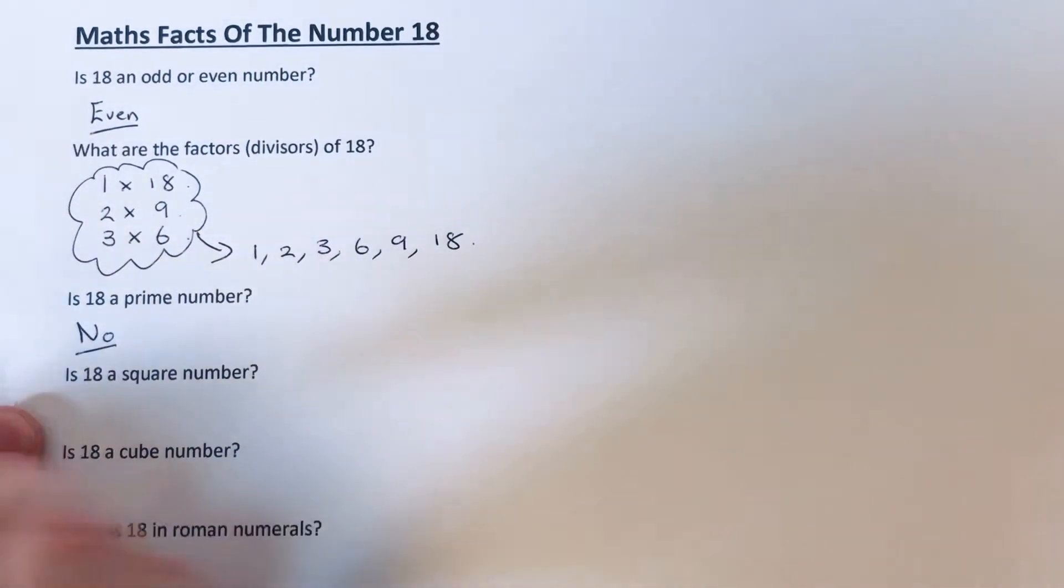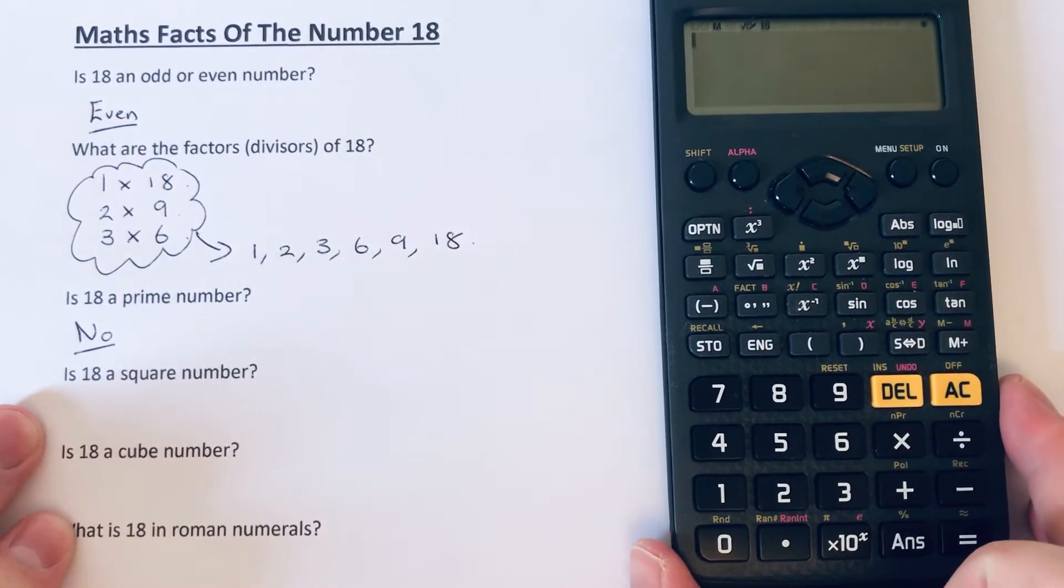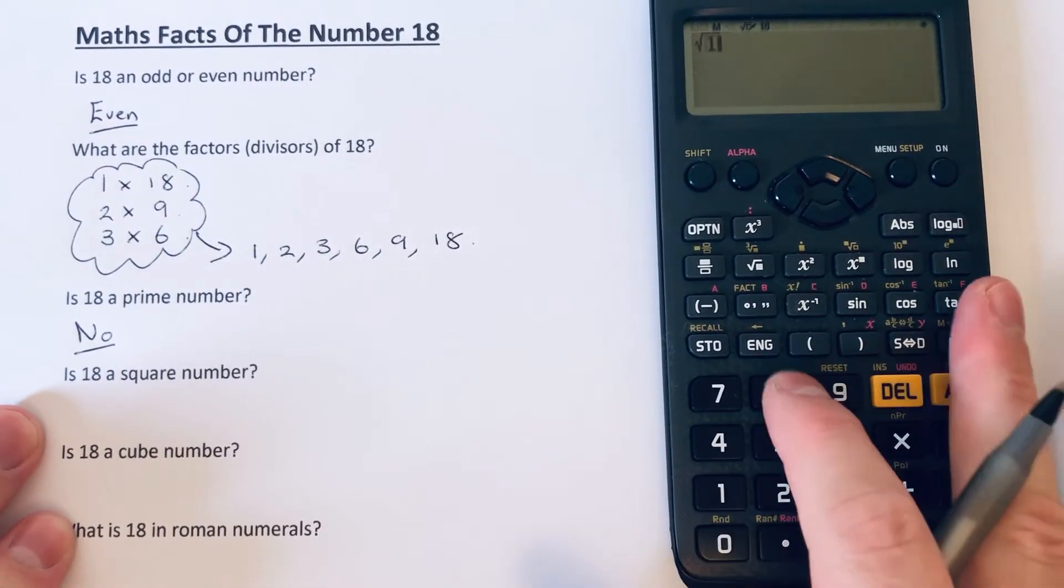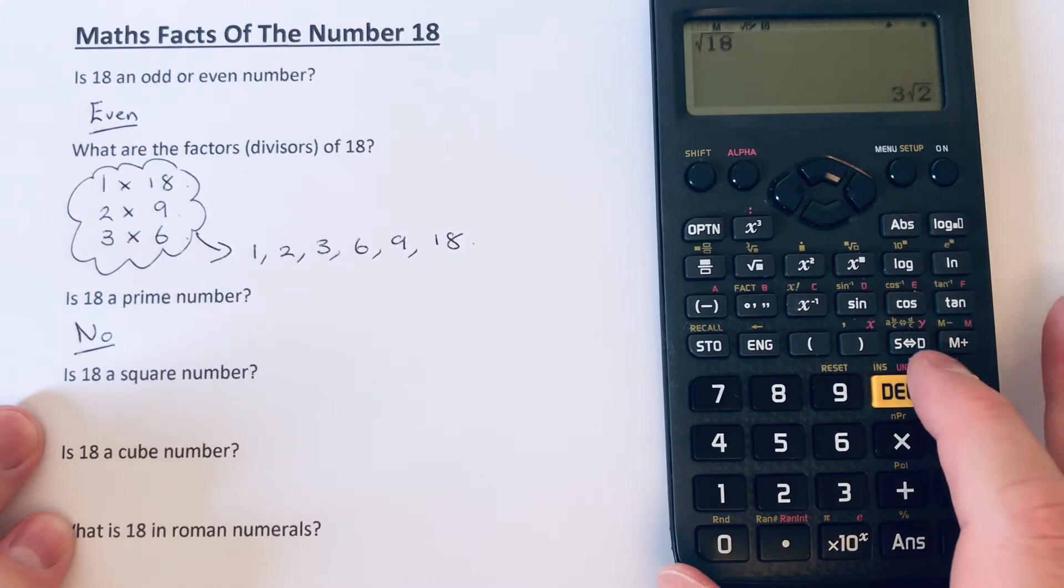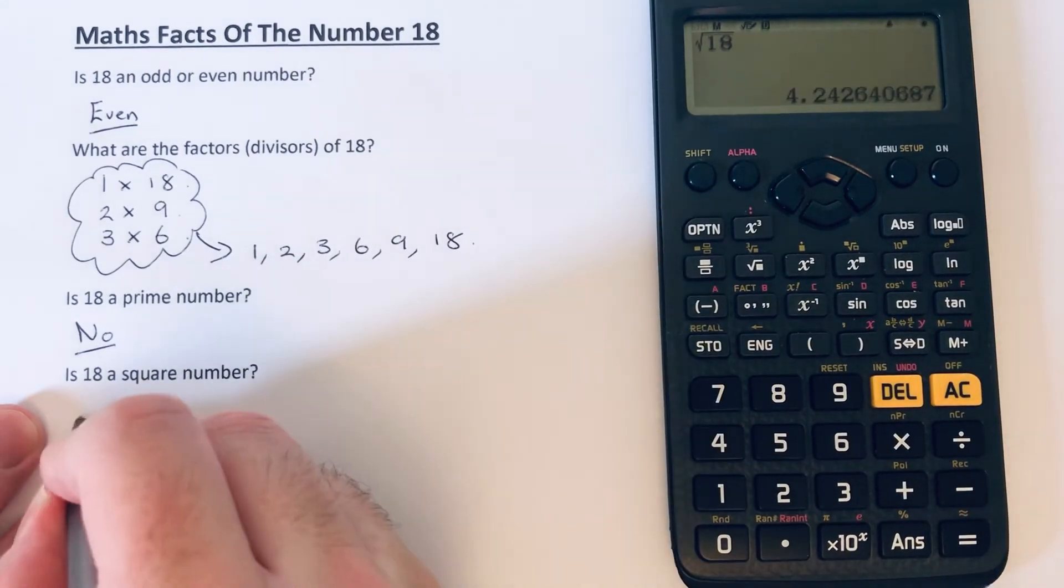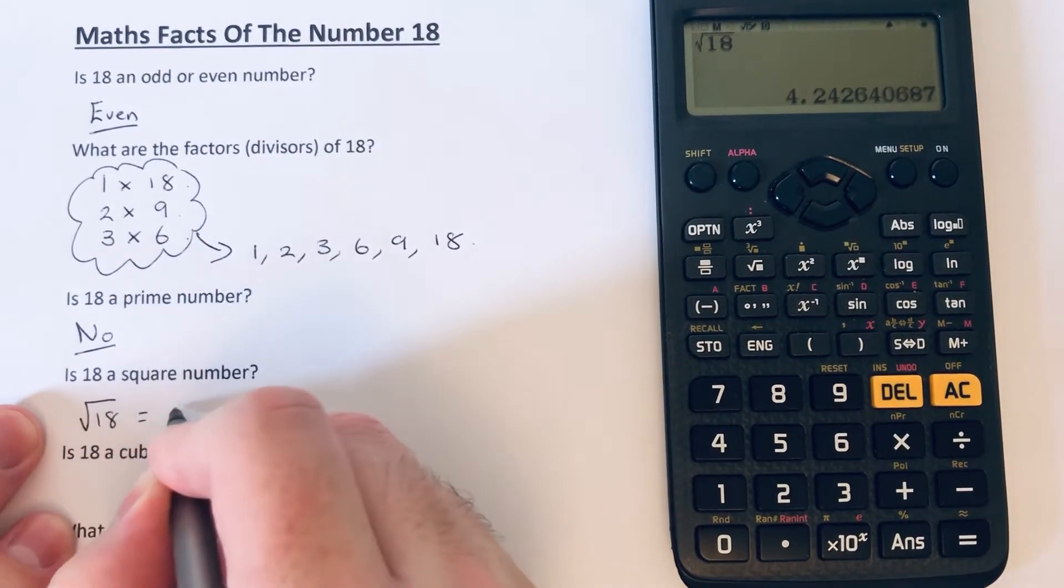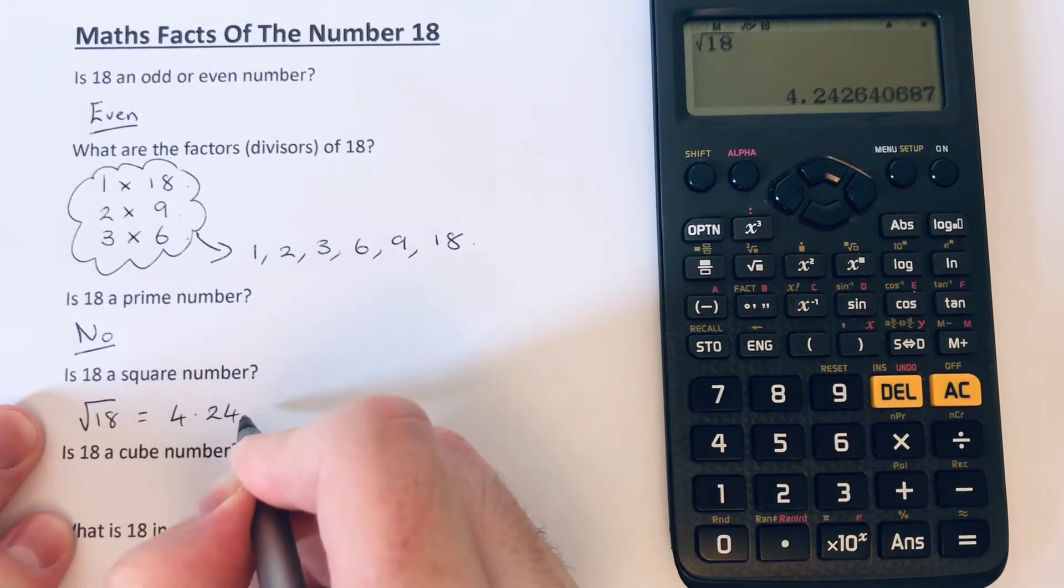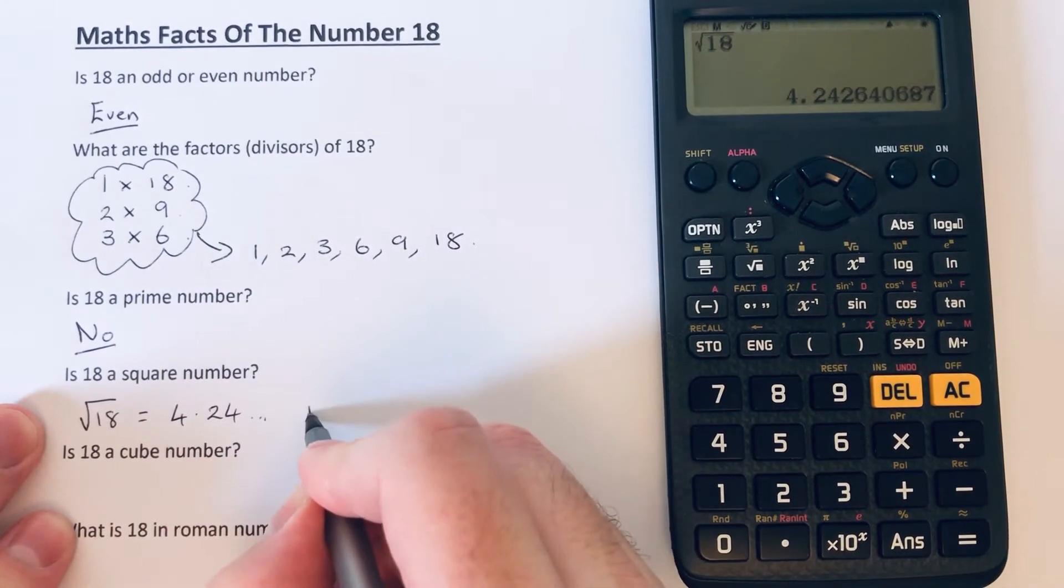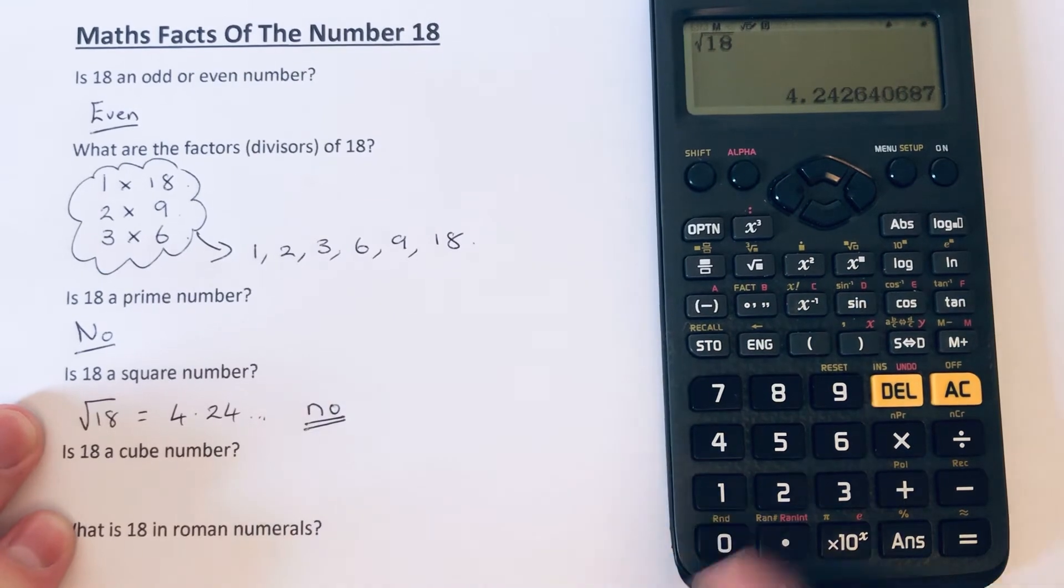Is 18 a square number? Well, if it's a square number, we should be able to square root 18 to give a whole number. So the square root of 18 comes out as a decimal, so the answer to that is no.